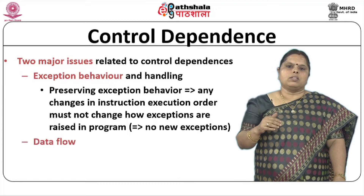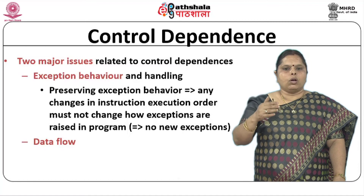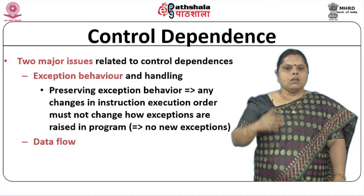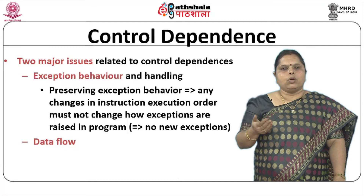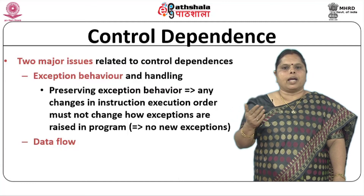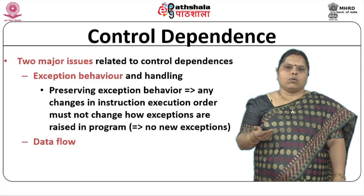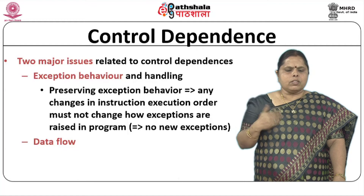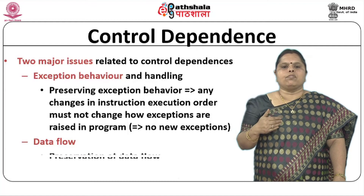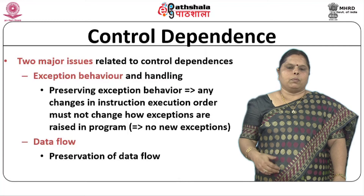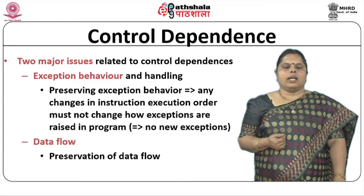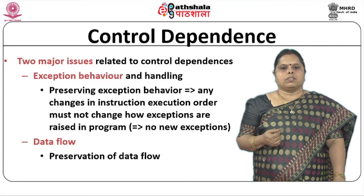The second issue is data flow. When you have branches, there is a certain flow of data between instructions, and depending on whether a branch is taken or not, you may execute a different set of instructions, so the data flow changes. This data flow will have to be preserved. Both the data flow and exception behavior must be preserved.